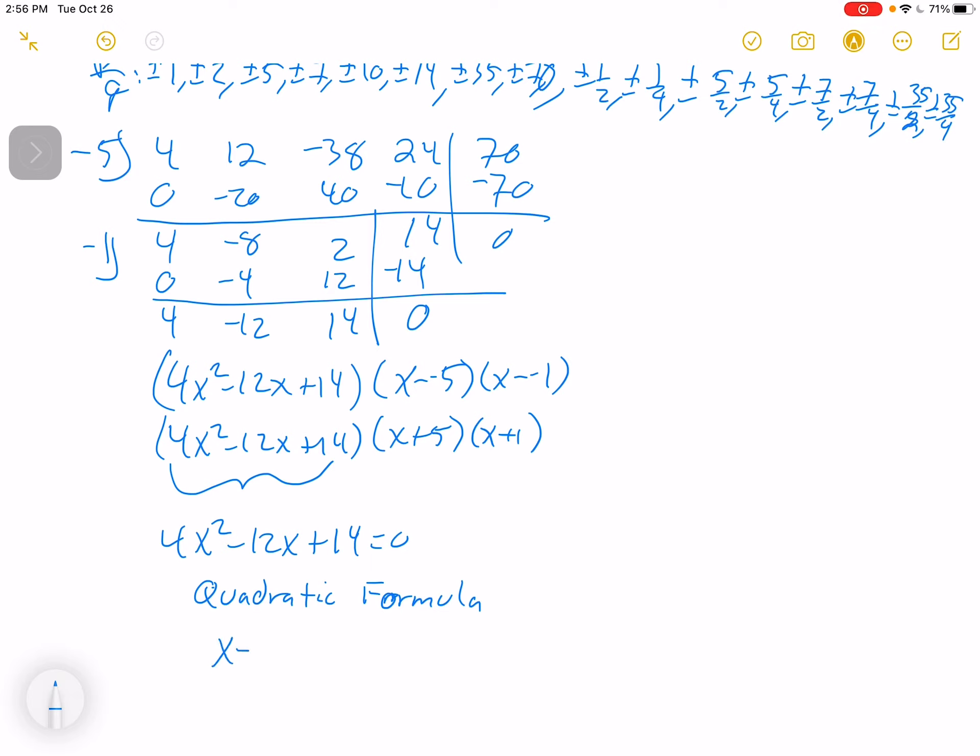So we'd have x equals negative b plus or minus square root of b squared minus 4ac all over 2a. So it's negative of negative 12 plus or minus the square root of negative 12 squared minus 4 times 4 times 14 all over 2 times 4.